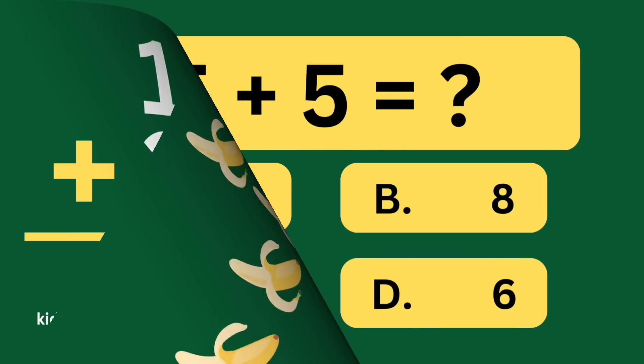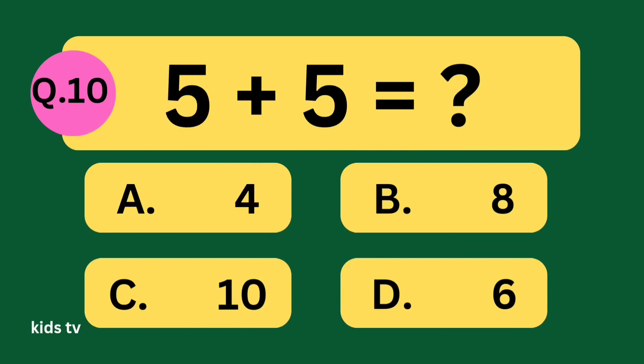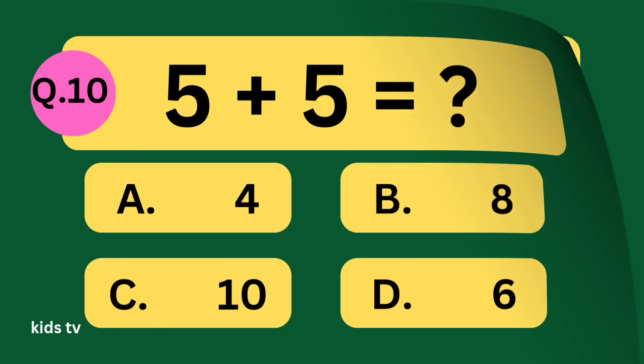5 plus 5 equal what? A: 4, B: 8, C: 10, D: 6.